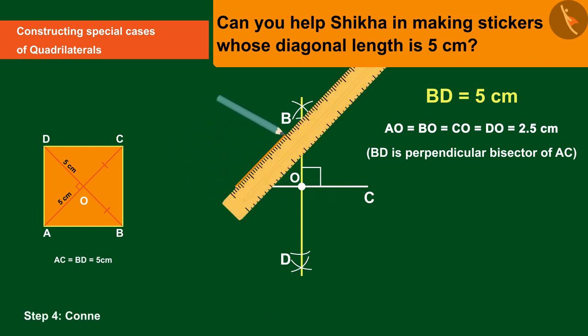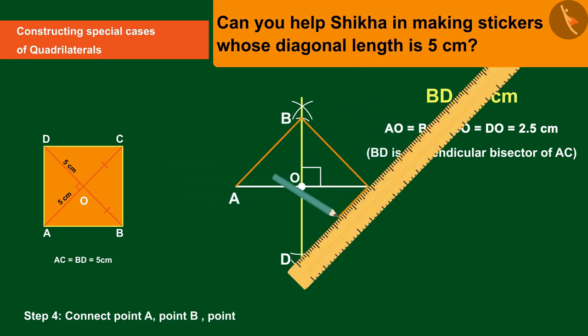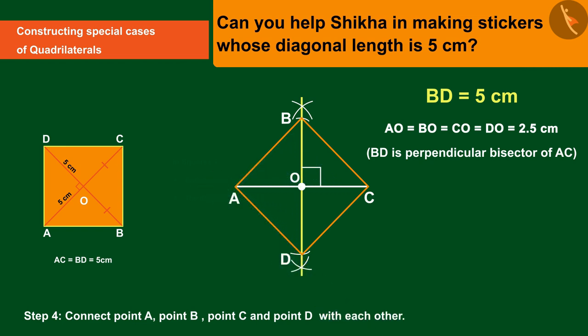Connect A, B, C, D, and back to A. Thus, the square ABCD is obtained.